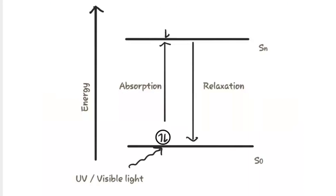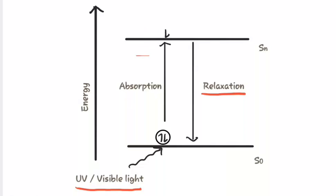When energy is supplied to the electron in the form of light, they absorb the energy and reach the excited state. In the excited state, electrons are very unstable and hence they try to get back to the ground state. The process by which they get back to the ground state is known as relaxation, and the process by which they absorb energy and reach the excited state is known as absorption.